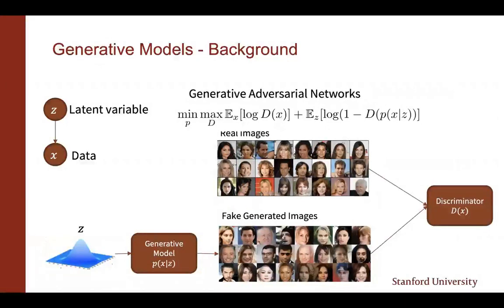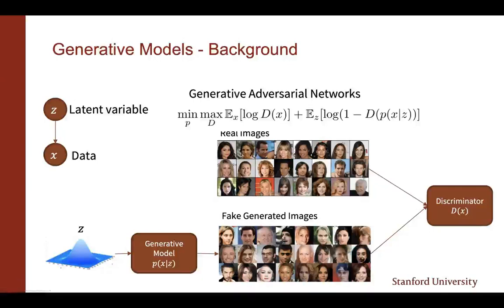There's another way to learn generative models based on latent variables — generative adversarial networks (GANs). We sample from a latent space, pass samples to the generative model to generate fake images, and also provide real images. A discriminator is trained to discriminate real images from fake ones. By training the discriminator and generator together, we converge to a situation where the discriminator can no longer distinguish real from fake images, meaning we've captured the real data distribution.